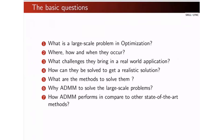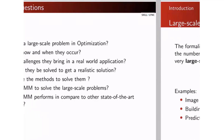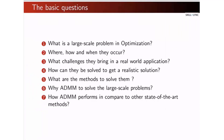The basic questions this presentation answers are: What is the large-scale problem in optimization? Where and how do they occur? What challenges do they bring in real-world applications? How can they be solved to get a realistic solution? What are the methods to solve them? Why use ADMM — the Alternating Direction Method of Multipliers — to solve large-scale problems? And how does ADMM perform compared to other state-of-the-art methods already available?